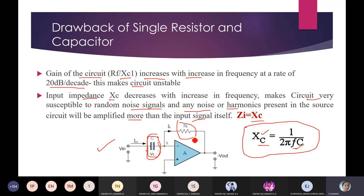To summarize the drawbacks: the gain increases at 20 dB per decade causing instability, and the input impedance decreases with frequency, making the circuit susceptible to random noise. The amplifier ends up amplifying noise signals rather than the input signal, giving a distorted output.